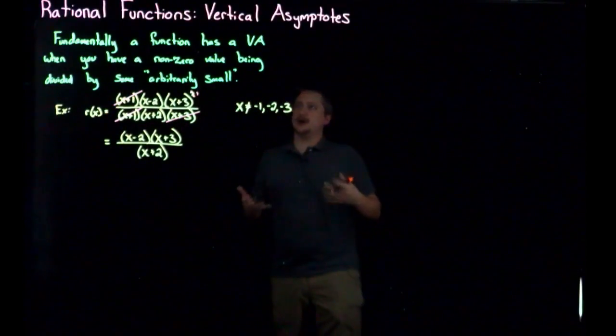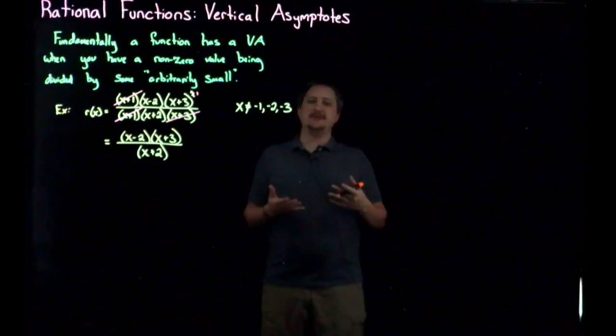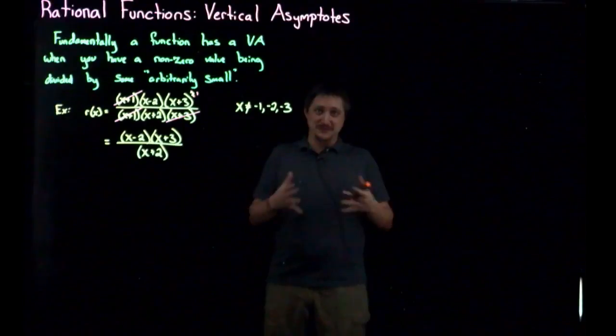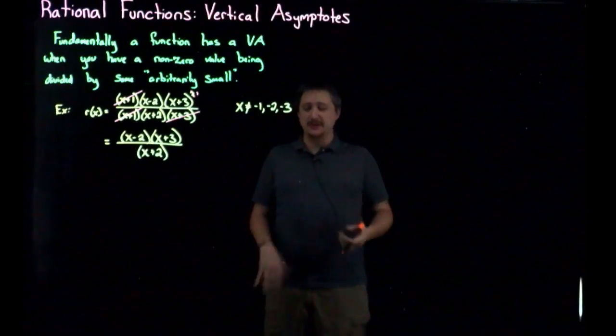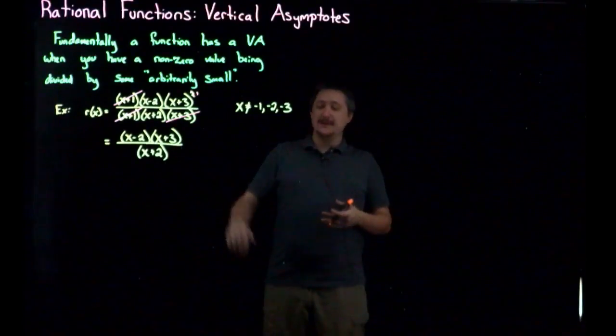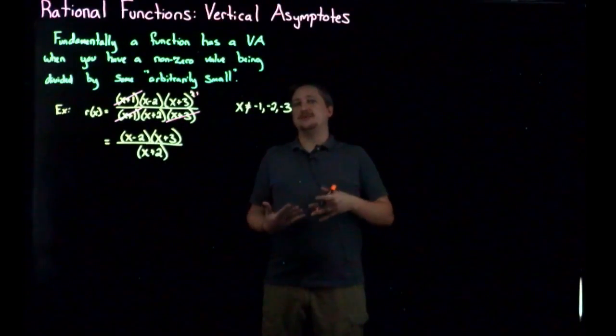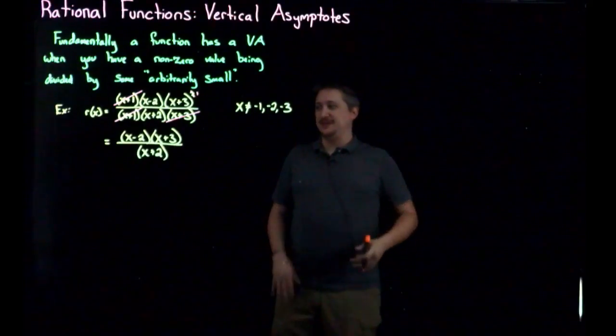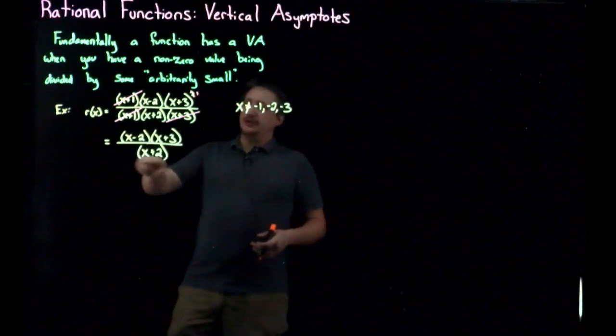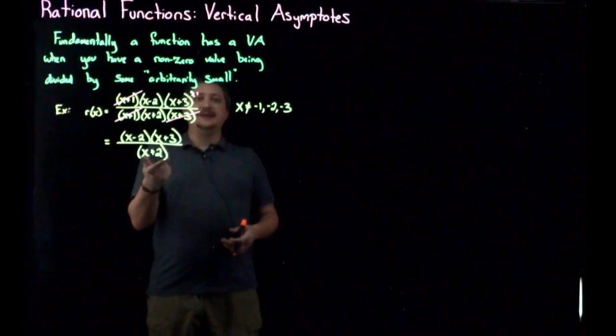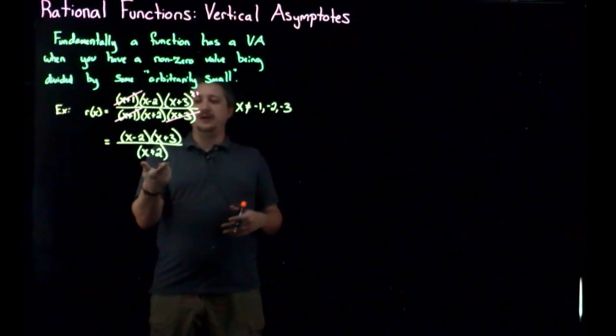Now a vertical asymptote occurs when I'm trying to divide by something arbitrarily small. And so the smallest thing we can think of in terms of magnitude would be zero. I can't actually divide by zero because it's not a thing, but nonetheless, I can think of what would happen as I get very close to dividing by zero.